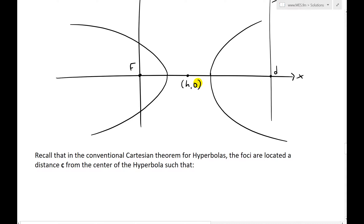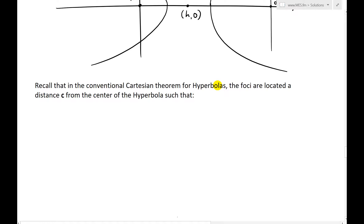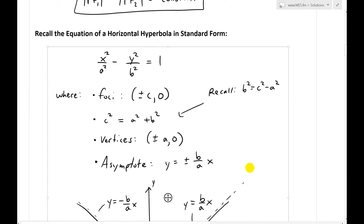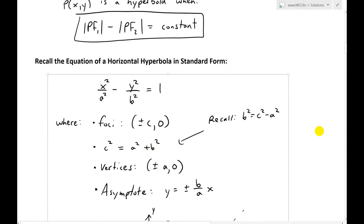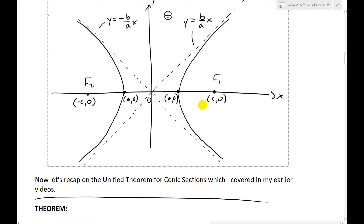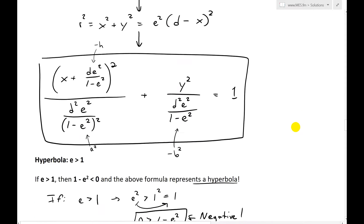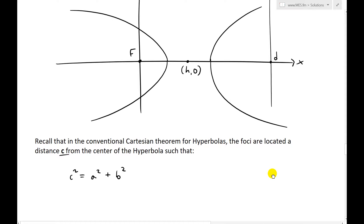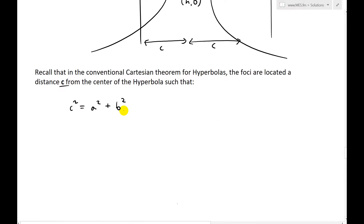Recall that in the conventional Cartesian theorem for hyperbolas, the foci are located at distance c from the center, such that c squared equals a squared plus b squared. The foci are distance c from the center — from center to f1 should be distance c, and also from center to f2. Now, c squared equals a squared plus b squared. Recall a squared is d squared e squared over 1 minus e squared, all squared.